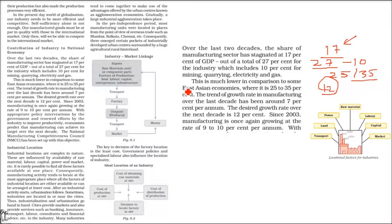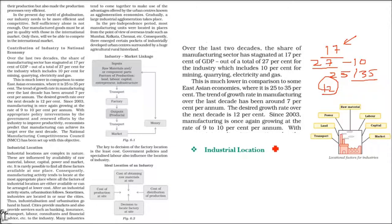Now, industrial location. Whenever we discuss an industry, we need to consider certain factors — where the factory will be, what factory it will be, and how it will be established. These are called industrial location factors. The location of an industry depends on certain factors. The first one is the availability of raw material. If raw material is in the east and the industry is in the west, there is no point. Raw material should be near, or transportation should be good.